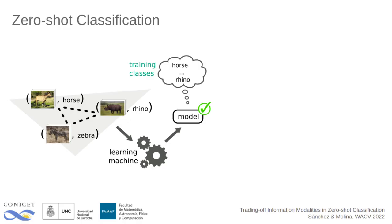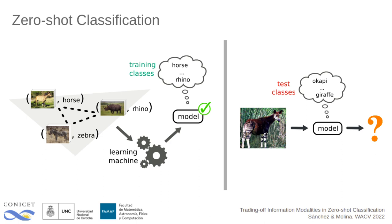In Zero-Shot Classification, we are given labeled samples from a set of known categories and we are asked to learn a model that's able to make predictions about object classes not seen during training. In this case we need to research additional sources of information that allow us to overcome the lack of annotations for the target categories.